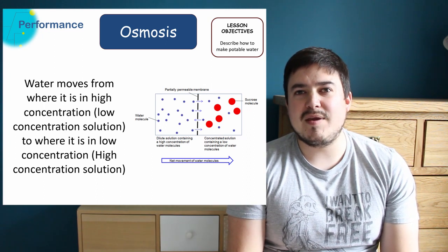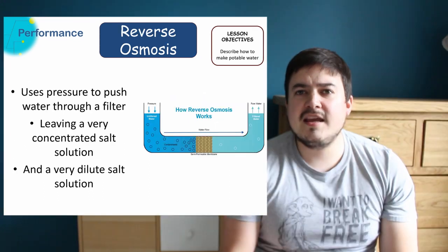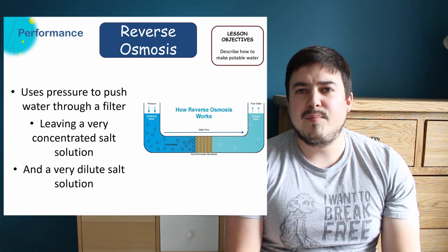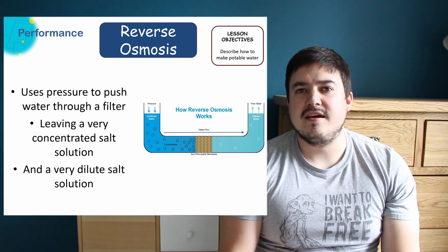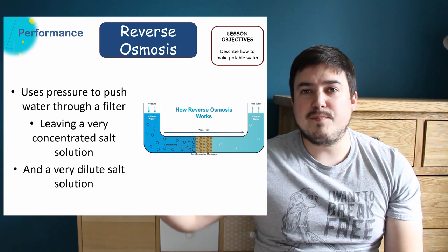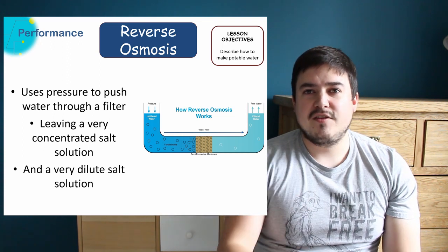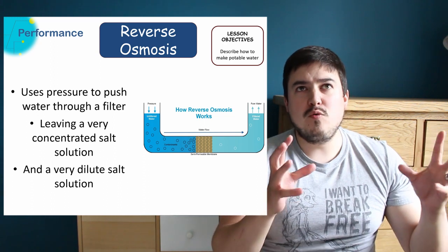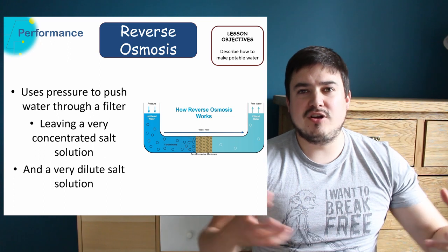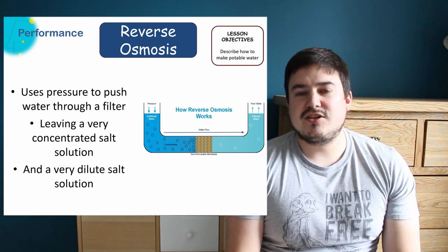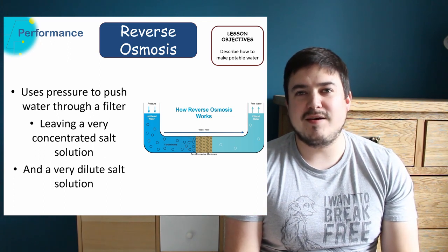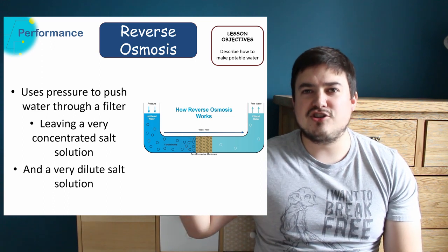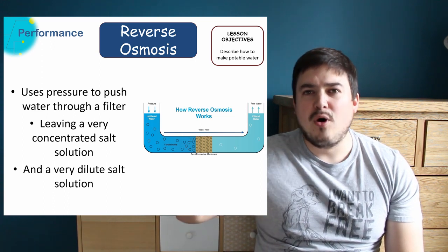In reverse osmosis, we put pressure on the high concentration solution to push the water back the opposite way against the concentration gradient, making the low concentration solution even more diluted so there should be less salt in there compared to the amount of water. And we make the high concentration solution even more concentrated.